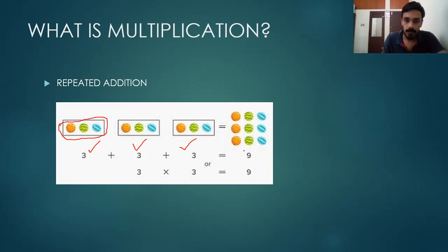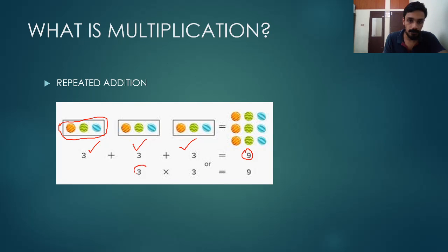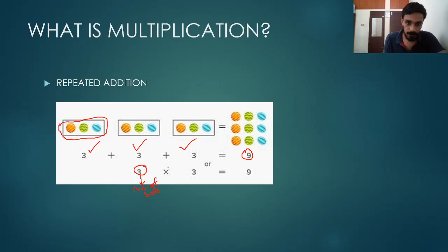So the answer that we get is nine. This is how we can show multiplication. First, we write the three — the number of balls — and the multiplication symbol shows repeated addition.